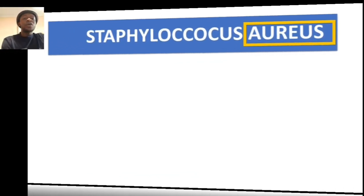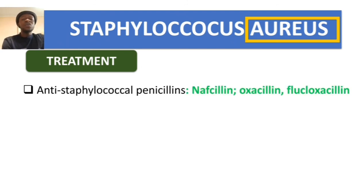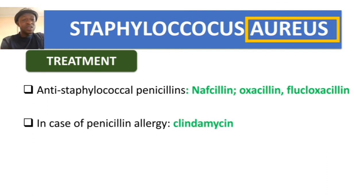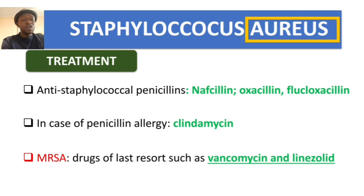For treatment: if the bacteria is methicillin-sensitive (MSSA), use anti-staphylococcal penicillins like nafcillin, oxacillin, and flucloxacillin. If there is a penicillin allergy, use clindamycin. If the bacteria is methicillin-resistant (MRSA), use last-resort agents — vancomycin and the expensive drug linezolid.